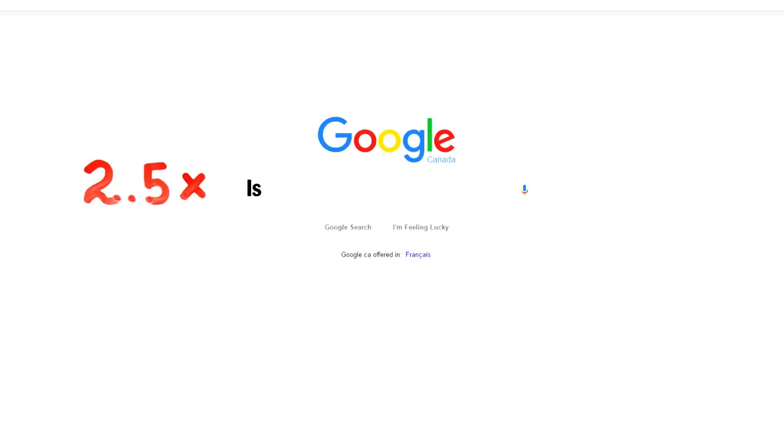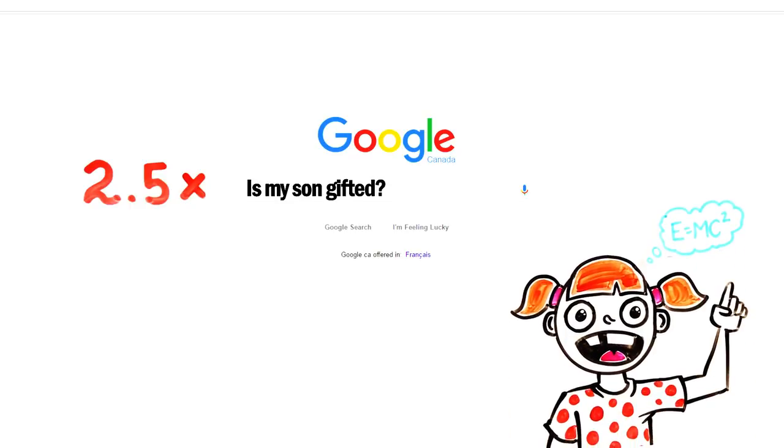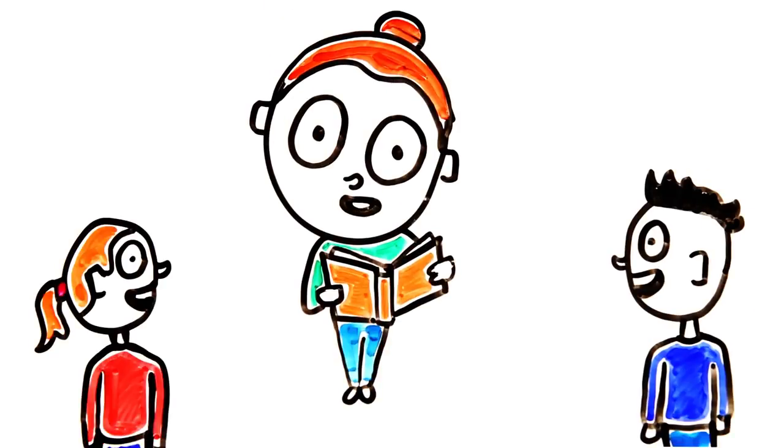Even Google search data shows that parents are 2.5 times more likely to search is my son gifted than is my daughter gifted, despite 11% more girls in gifted programs in America. And girls pick up on these biases as early as 6 years old.